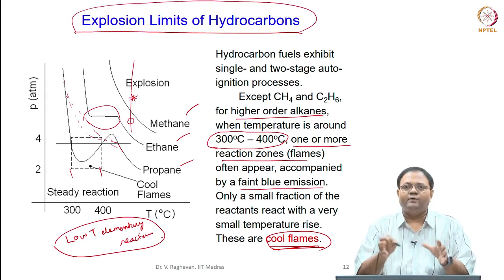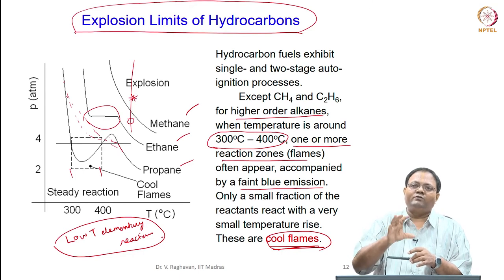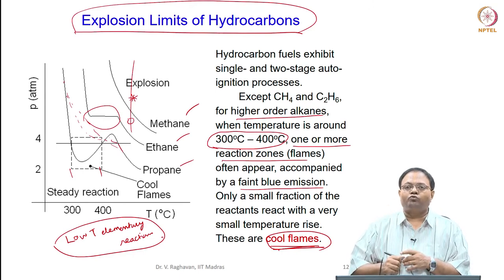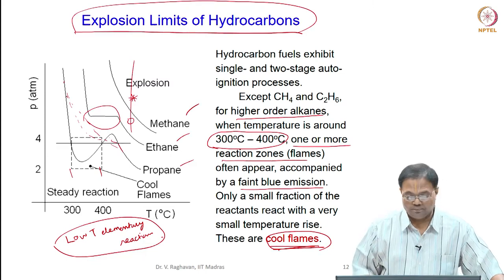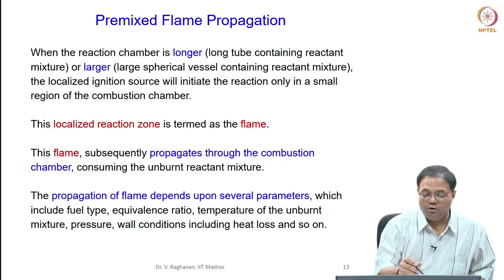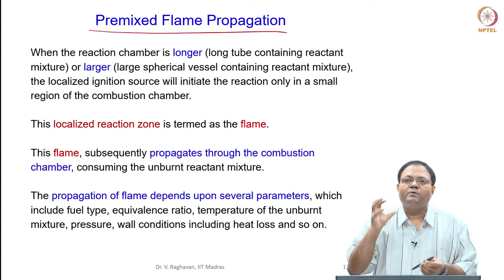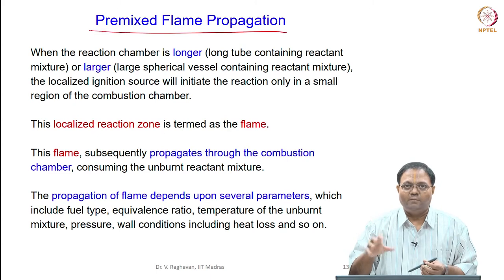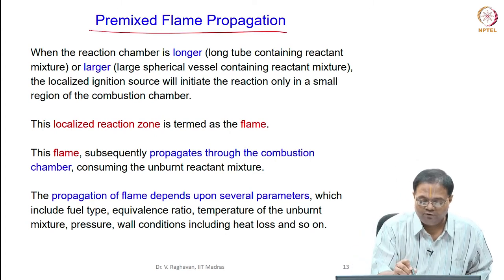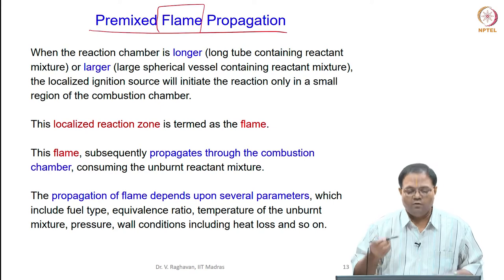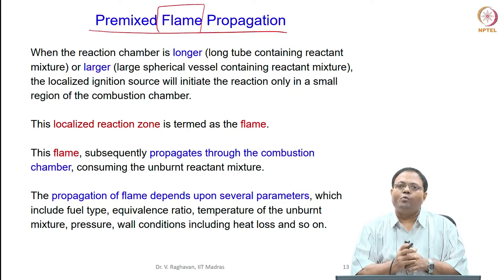That is why low temperature chemistry or chemical kinetics is sought to do such combustion phenomena in the IC engines. Cool flames are the ones formed with very low chamber temperatures. Till now what we have seen is volumetric phenomena - the entire volume has the reaction occurring simultaneously, and the properties are uniform. Spatial variation is not much. Now let us go to what is called premixed flame propagation.